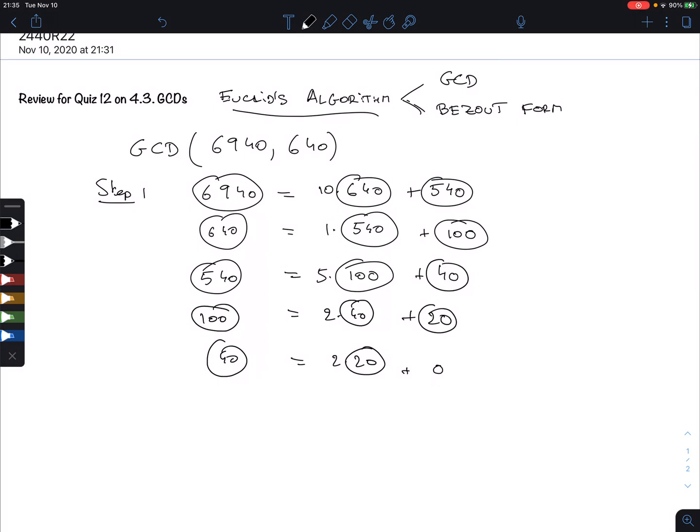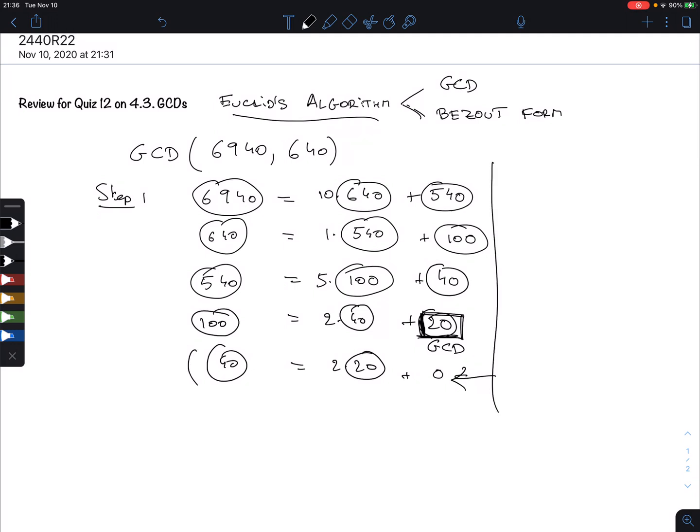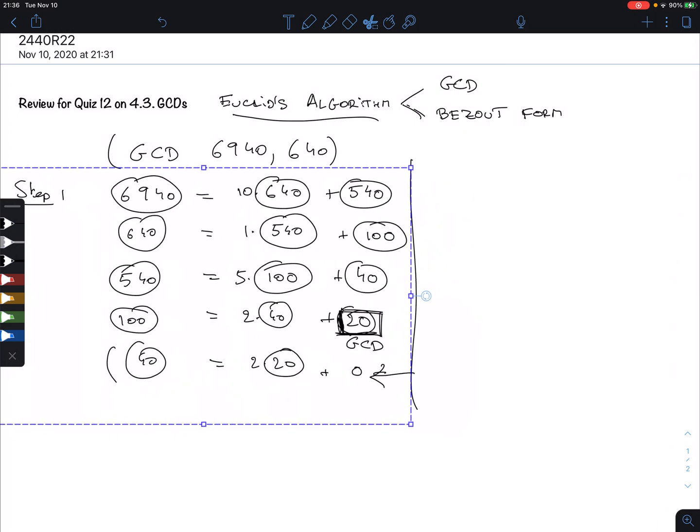If you get a 0 here, this means that the one you got before is the GCD. So this is the GCD. This line we don't really use in the backwards form. So backwards, let me move this a little bit up here so I can have a little bit more space.